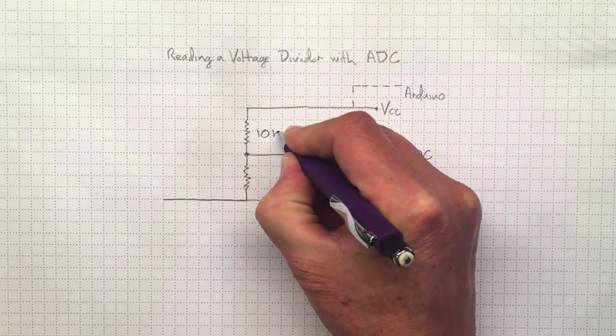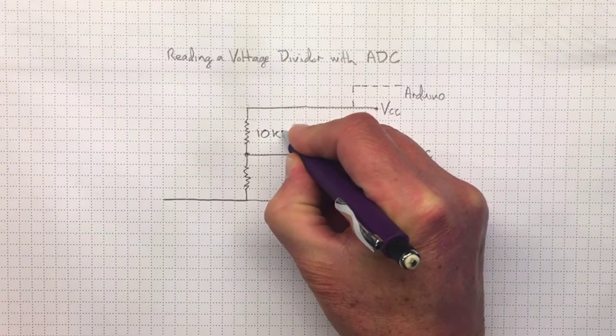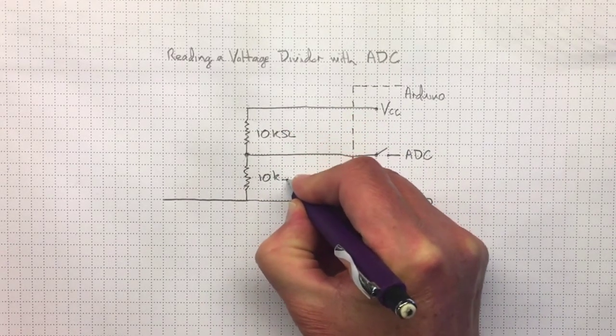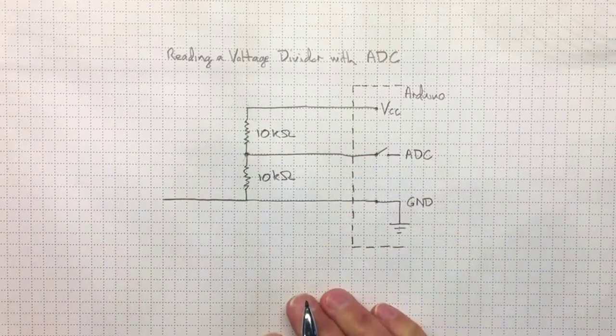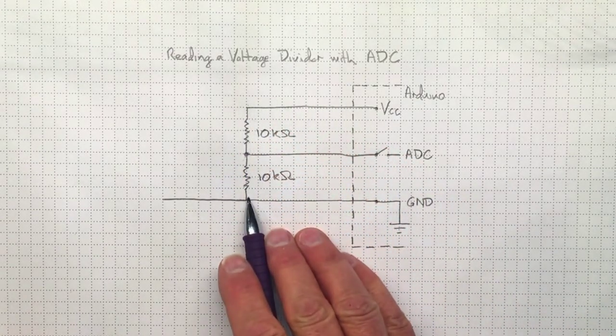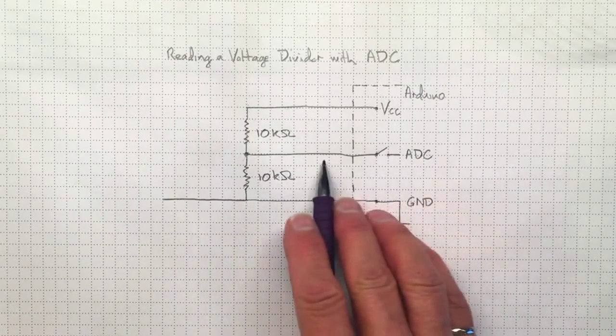But if these resistances are larger, like say 10 kilo ohms, then we may have a fairly small amount of current flowing in our voltage divider, and the amount of current going into the analog-to-digital converter may pull the voltage in the center here down when we go to make the measurement.